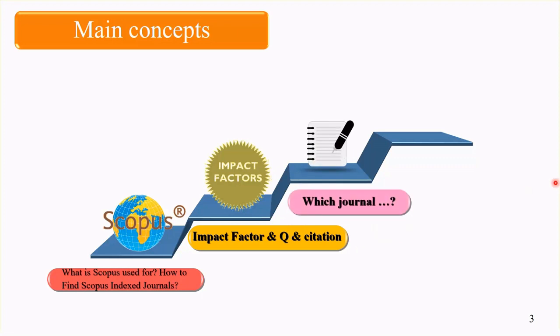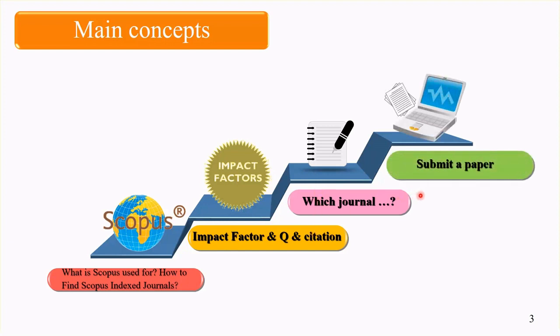Another important topic is which journal is proper for you to submit your paper in your field of study. It is very important where you publish your science, and also what the quality of your science is that you want to publish. At the end, we will cover how to submit your paper with attention to all the previous steps and concepts.